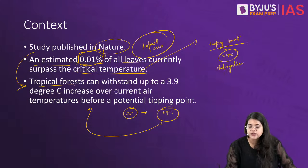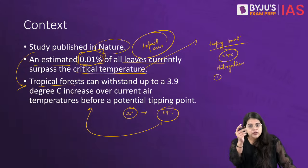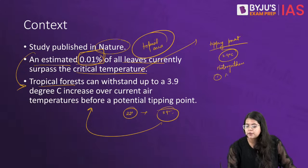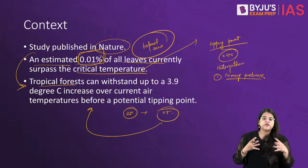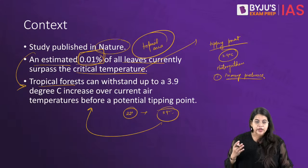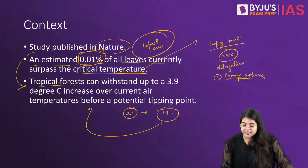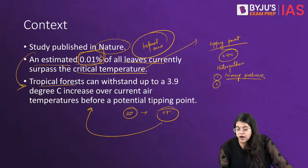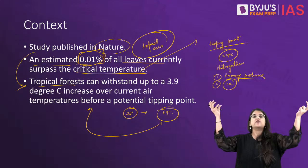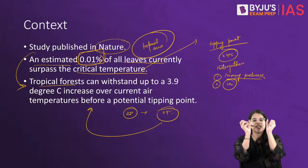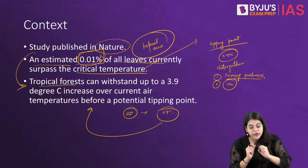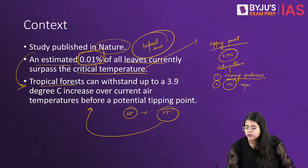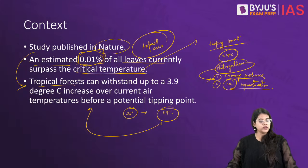Why is photosynthesis so important? First, green plants are the primary producers — they produce food because of which ecosystems sustain. Second, during photosynthesis, plants take in carbon dioxide, meaning they sequester it — reducing the amount of CO2 in the atmosphere. So carbon sequestration is another critical role linked to photosynthesis.